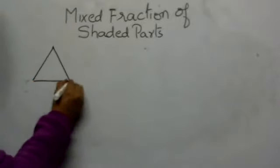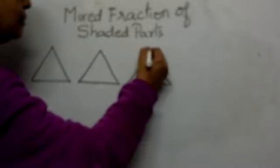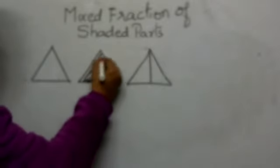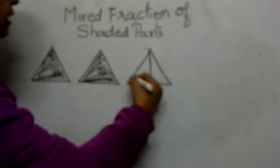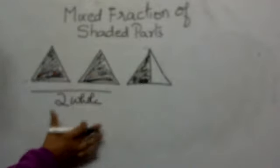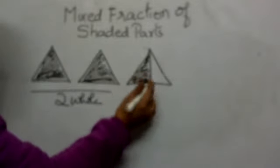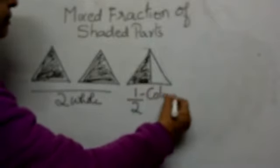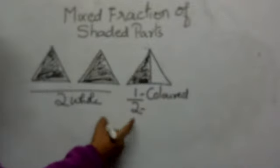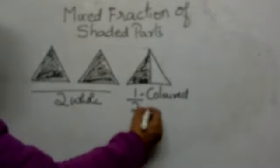I will give you one more example. Suppose there is a triangle, and this triangle is fully shaded. And here another triangle is only half shaded. So we have two whole triangles which are fully shaded, and here half is shaded — there were two parts, so the fraction is one by two. One part is colored out of two parts.